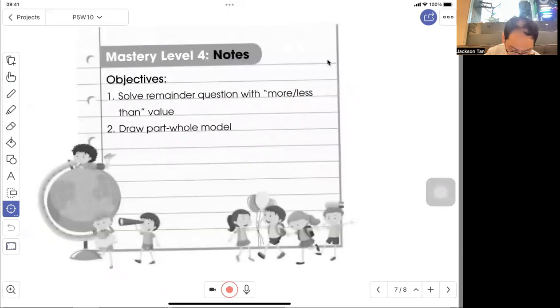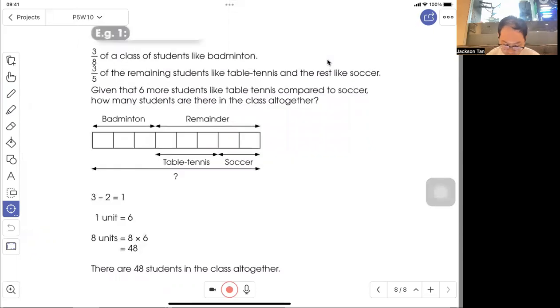Mastery Level 4: Solve remainder fraction of more or less than a value using a comparison model. 3/8 of a class of students like badminton. Draw your model. Make sure there are 3 units out of 8 for badminton.